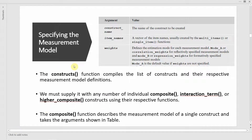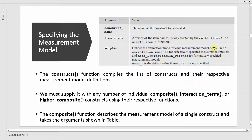To specify the measurement model, we need to identify the construct name, the item names, and the weights. By weights we mean whether we have a reflective or a formative construct. We'll look into this in detail in coming videos, and there is also a reference video in the description.